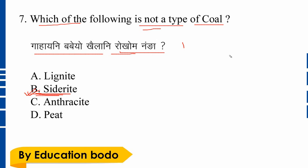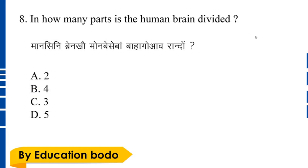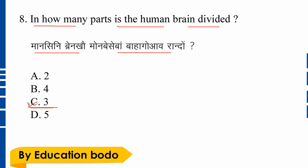Question number eight: Into how many parts is the human brain divided? Option C is the right answer. The human brain is divided into three parts.